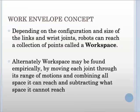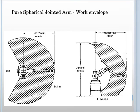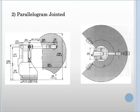Regarding the work envelope concept: depending on the configuration and size of the links and wrist joints, a robot can reach a collection of points called the workspace. The workspace may be found empirically by moving each joint through its range of motion and combining all reachable spaces while subtracting unreachable spaces. The work envelopes for spherical jointed arm and parallelogram joint configurations are shown in both top view and side view.